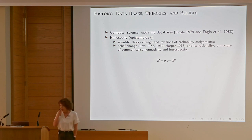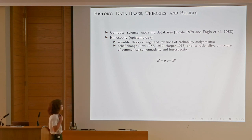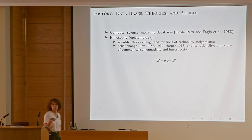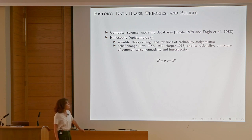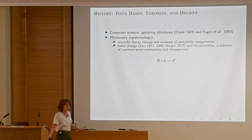In computer science, we started with updating databases — incoming information, what do you do with it? There should be certain axioms satisfied by the update, and certain computational constraints. In philosophy, it's a big thing too: we have philosophy of science in which we study how scientific theories get revised. How do we drop certain paradigms and get a new one?